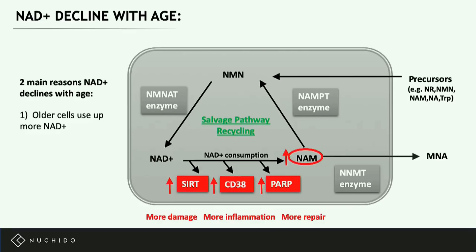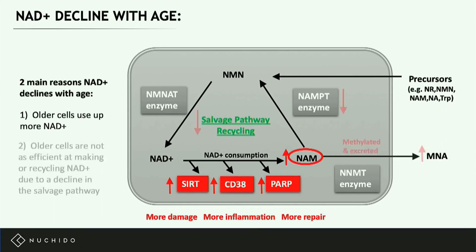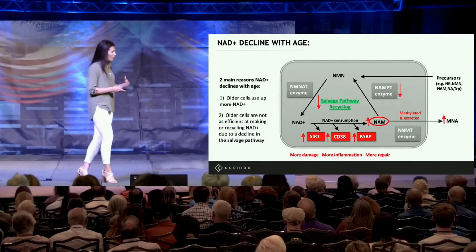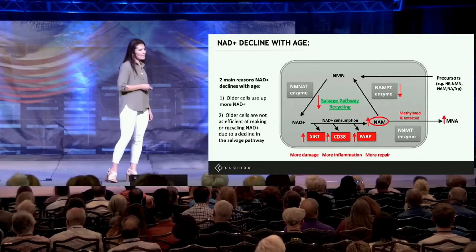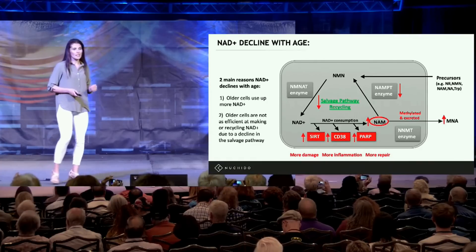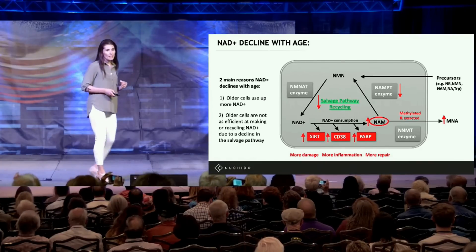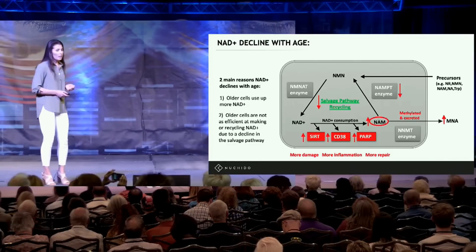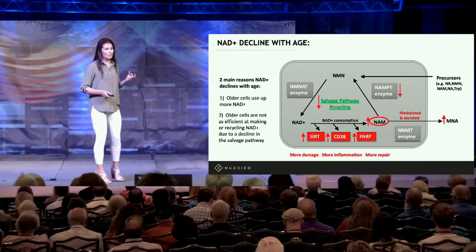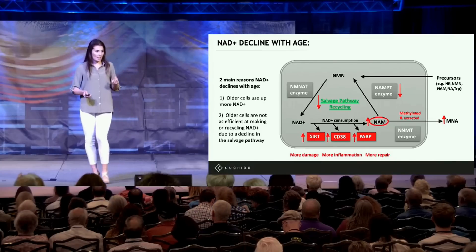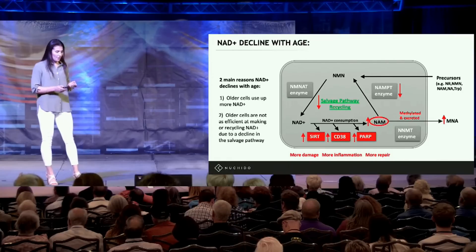At the same time, that would be fine if cells still had a youthful recycling capacity — but that's the second problem. In older cells, the efficiency of the salvage pathway actually goes down, because the key enzyme NAMPT declines with age. So at a time when cells are using up more NAD and could do with more recycling, they simply don't have it, and you get a deficit. This is why your NAD levels actually decline.